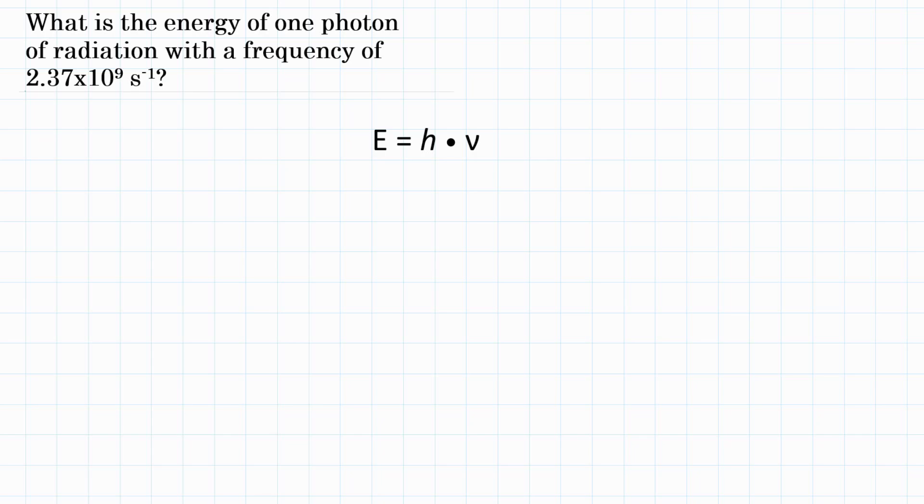So the problem is giving us frequency. It's 2.37 times 10 to the 9th. So V for frequency equals 2.37 times 10 to the 9th, and that is in hertz or seconds to the negative 1 power. And the question is asking for energy. So we want to find E.